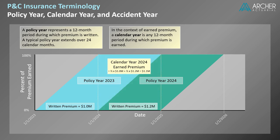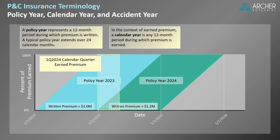We can use this estimation technique to calculate other calendar periods, such as the first calendar quarter of 2024. Notice that the majority of the earned premium for this calendar quarter relates to policy year 2023. We can use basic geometry to determine that policy year 2023 contributes 7/8ths of its earned premium to the first calendar quarter of 2024, while policy year 2024 contributes only 1/8th. Calculating this weighted average results in an earned premium estimate of $256,250 for the first calendar quarter of 2024.